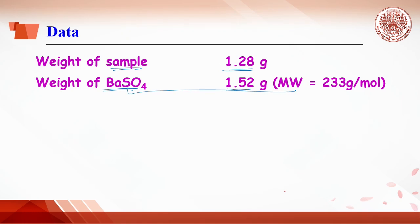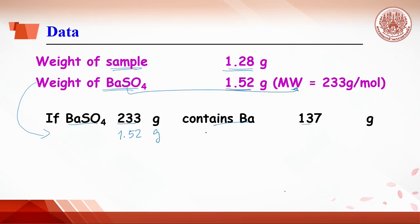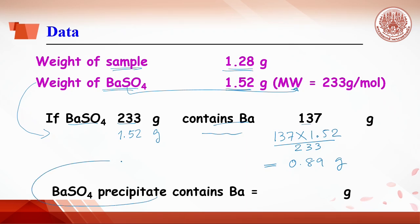Don't forget the molecular weight of barium sulfate is 233 g per mole. Now, we do extrapolation to determine the percentage of barium in barium sulfate by writing the relationship between barium sulfate and barium. This barium sulfate, molecular weight of 233 g, contains barium 137 g. But we have barium sulfate only 1.52 g. So, it can calculate the barium of 137 times 1.52 divided by 233, which equals 0.89 g. We have barium sulfate after precipitation containing barium of 0.89 g.